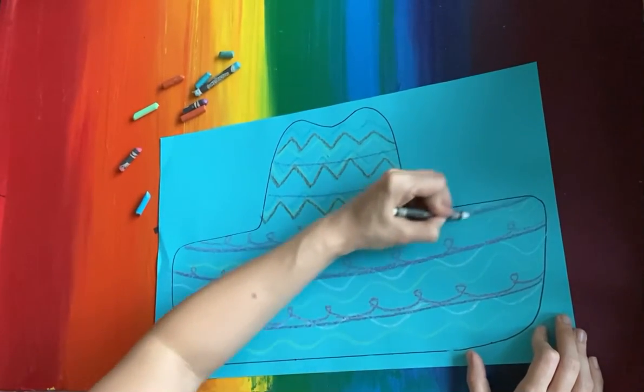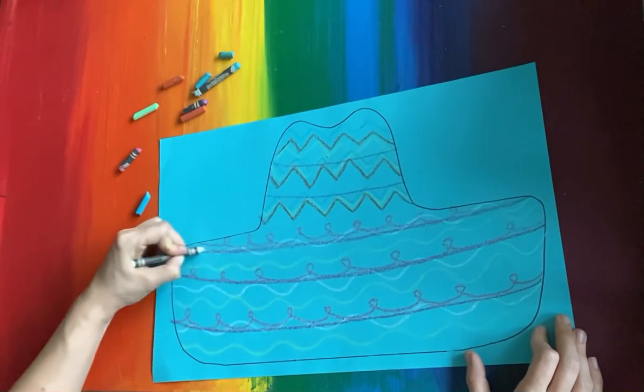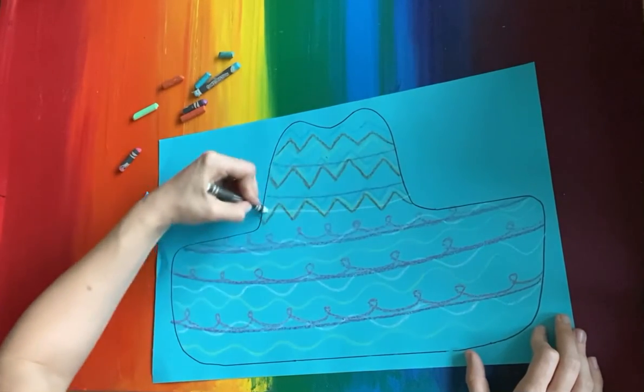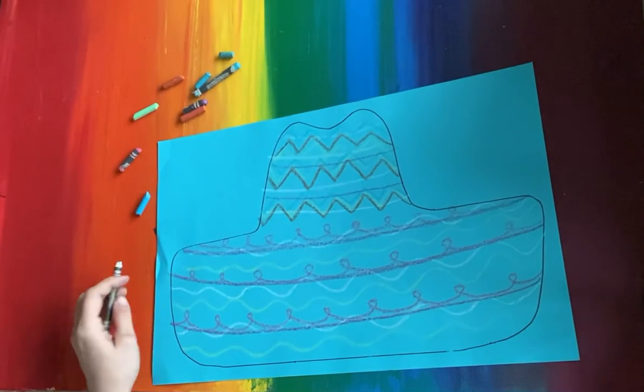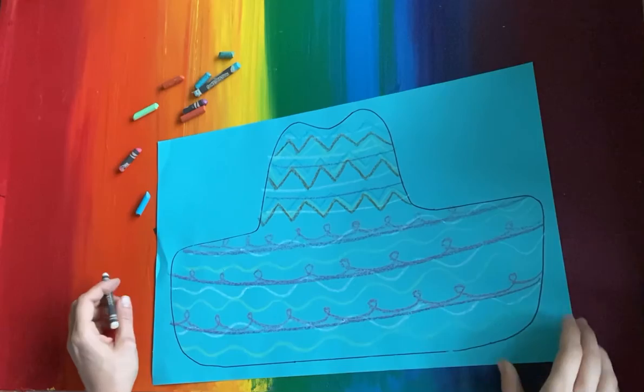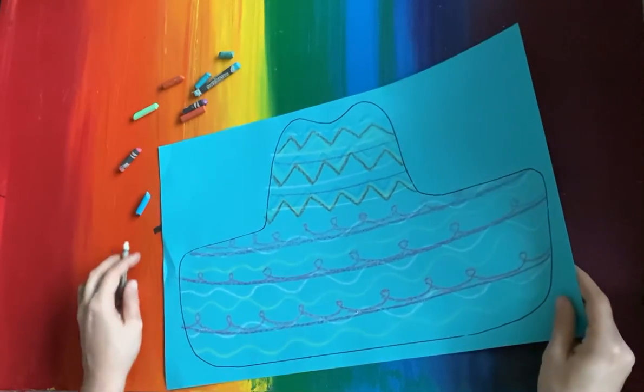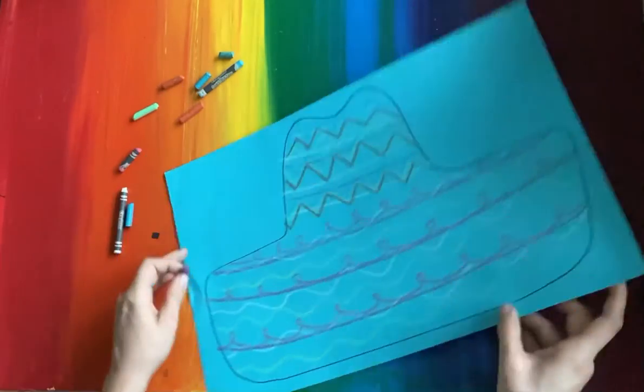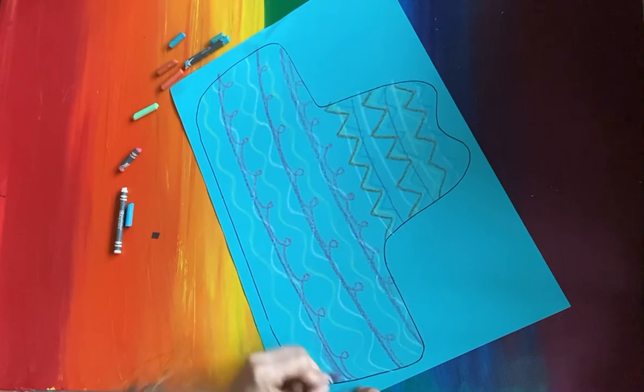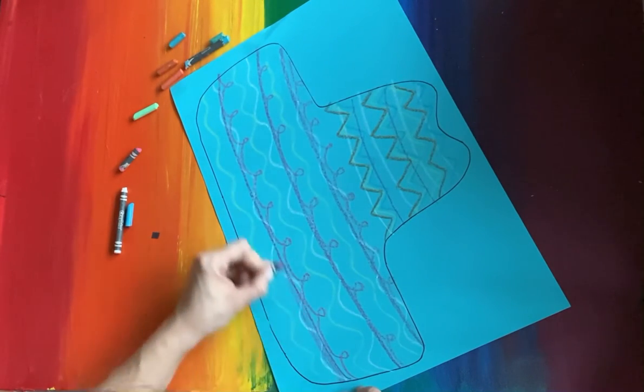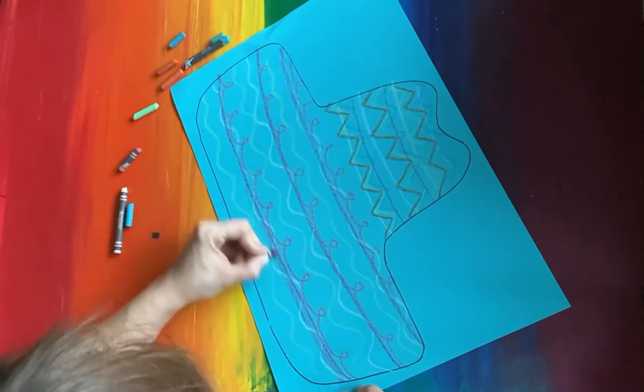How about thick and thin lines? Can I make some of my lines thicker and keep some thin? Absolutely! I might take my purple and make some of these lines into almost like stripes, make them nice and thick.